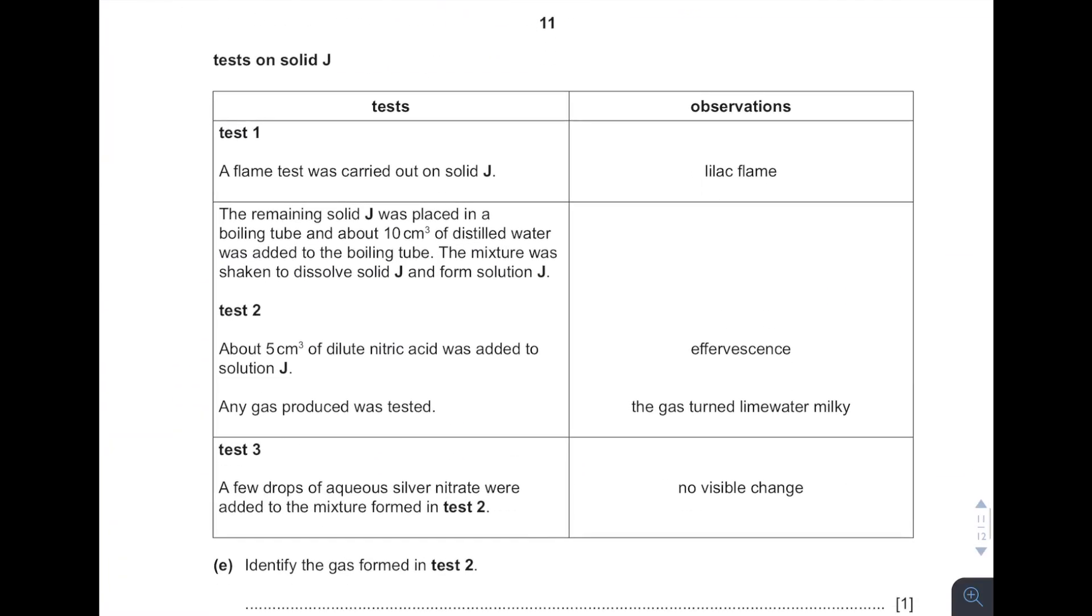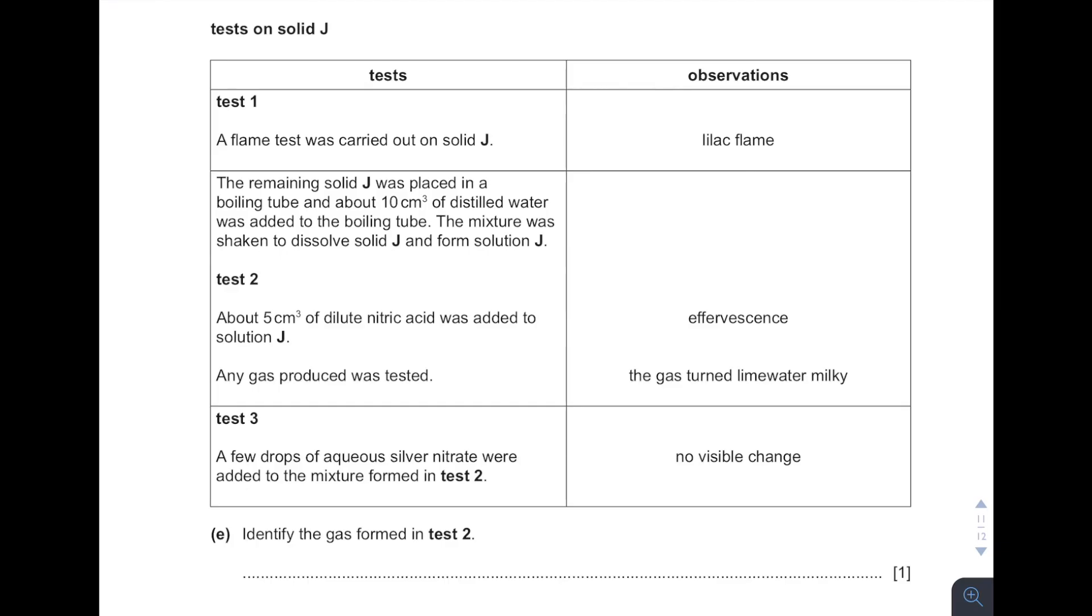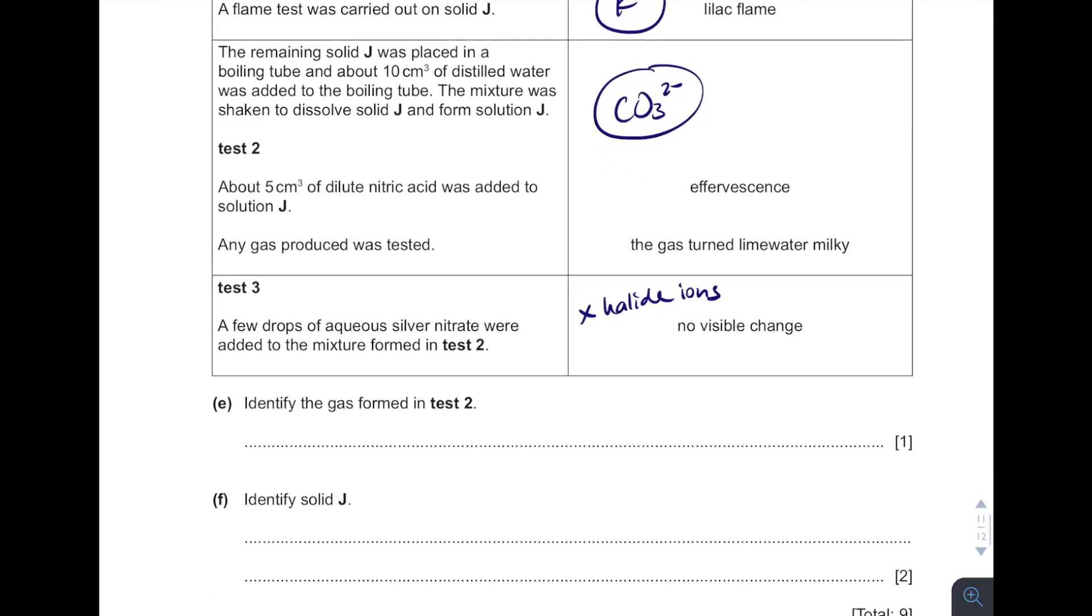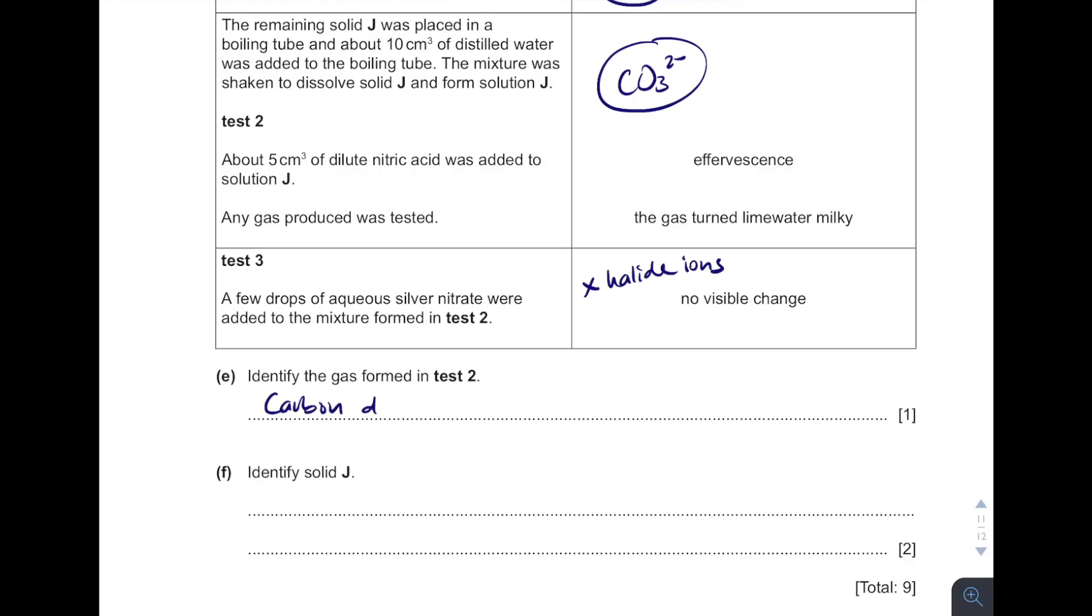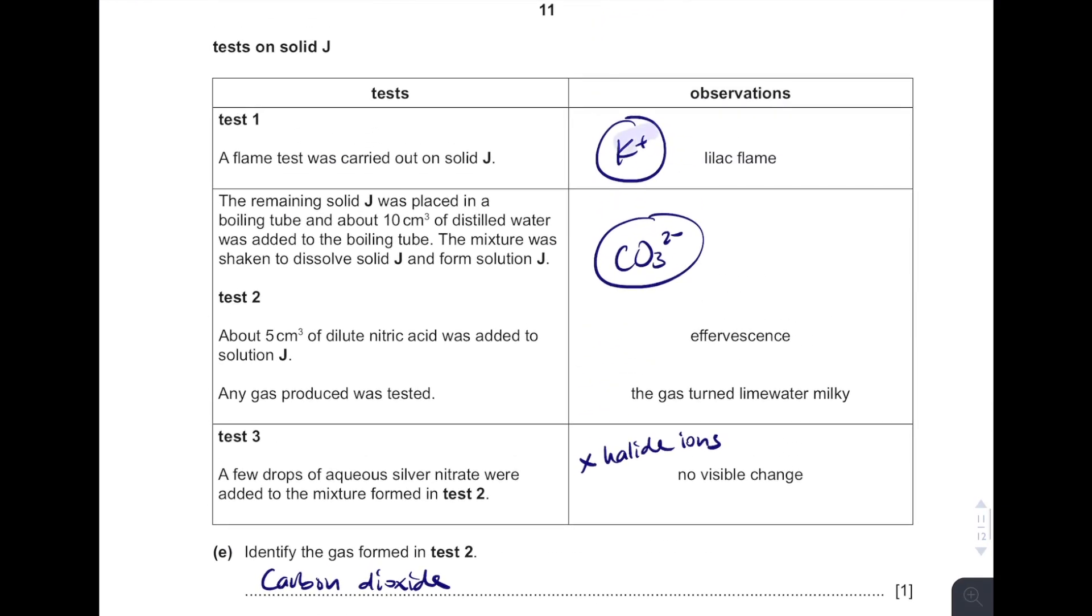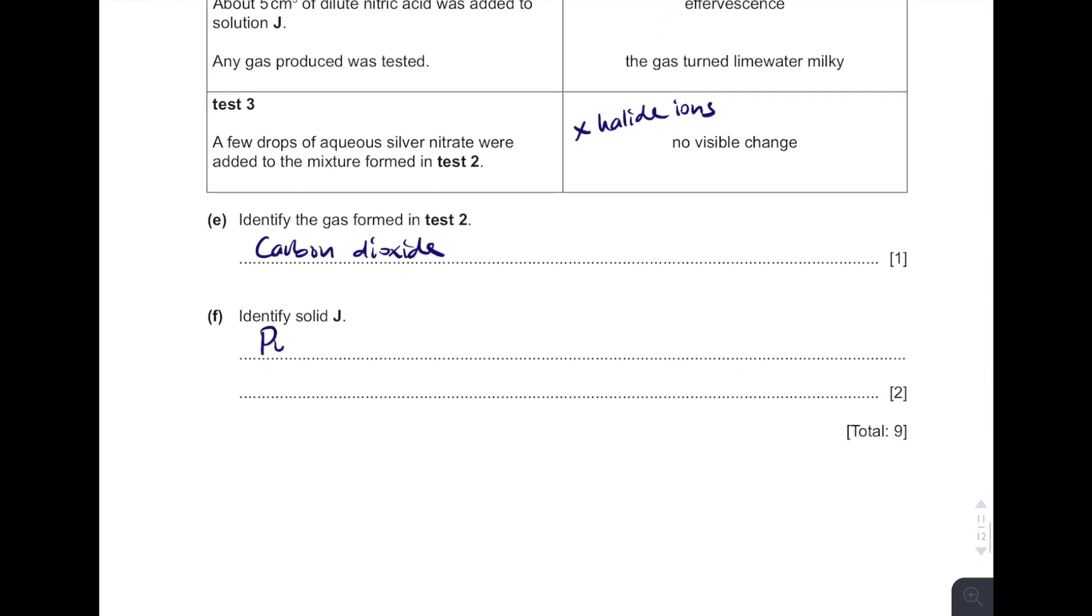Then see, given with this table. Flame test, lilac indicates the presence of potassium. Then added with acid, the gas produces lime water milky. It is added with acid and it produces carbon dioxide gas. So it indicates the presence of carbonate ions. And then when it is tested with silver, no visible change. Silver is used to test for halide. No visible change, which means there is no halide ions. So what is the gas formed in test 2? It is carbon dioxide gas. And what is solid J? Potassium carbonate. That's it. Super easy.